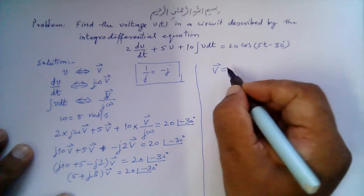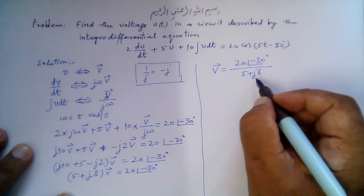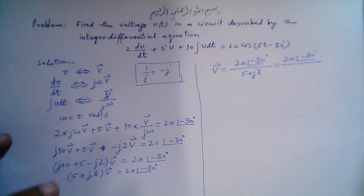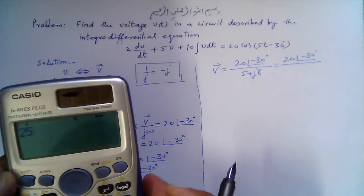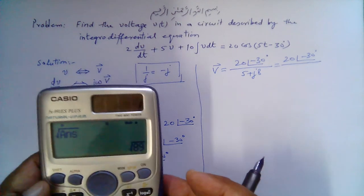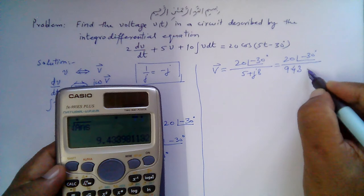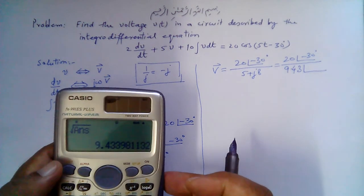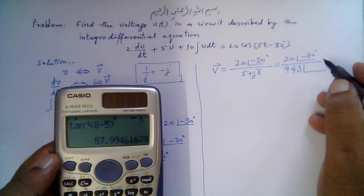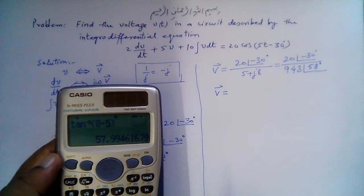Solving for V̄: V̄ = 20∠-30° / (5 + j8). This division is better performed by converting the rectangular form to polar form. The magnitude of 5 + j8 is √(5² + 8²) = √(25 + 64) = √89 = 9.433. The angle is tan⁻¹(8/5) ≈ 57.99°, approximately 58 degrees.